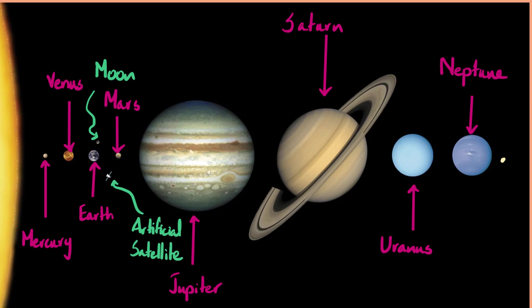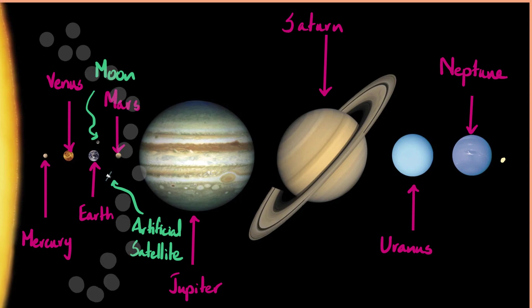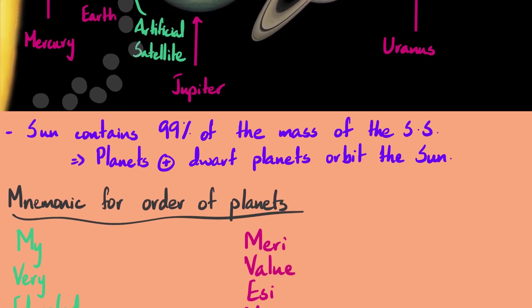The last thing to discuss is asteroids and comets. Between Mars and Jupiter there is something else — pieces of rock floating around. This region is called the asteroid belt. This is a good starting point to talk about asteroids and comets, their similarities, and their differences.